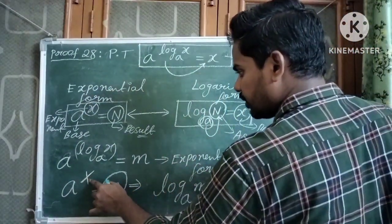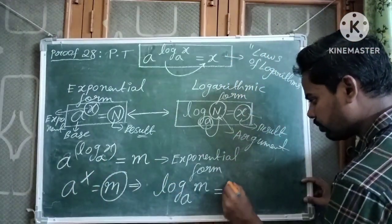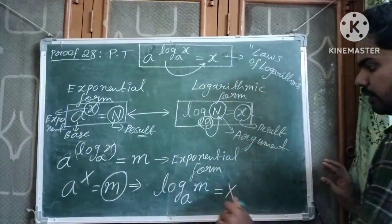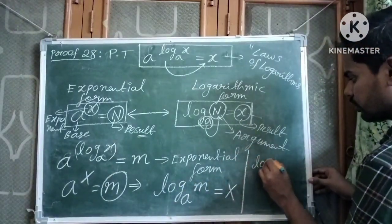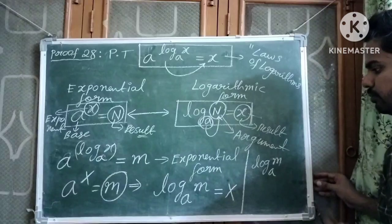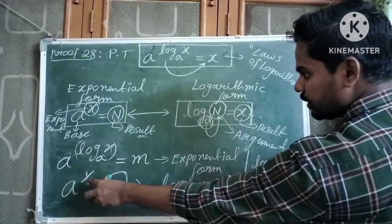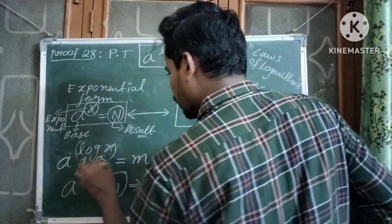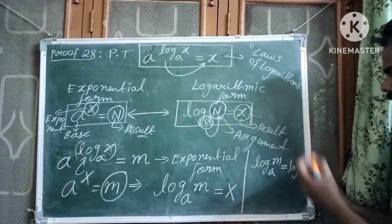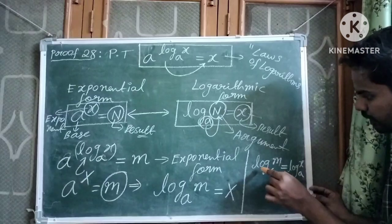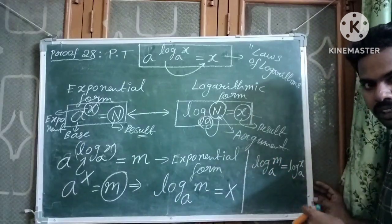The exponent of the exponential form is the result of the logarithmic form. Here the exponent is capital X. So log m to the base a equals capital X. Now, what is capital X? Capital X equals log x to the base a. So we have two logarithms with the same base.